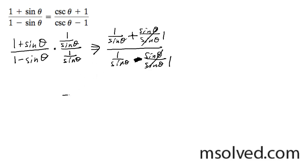And we ultimately end up with rewriting this 1 over sine theta as cosecant. We end up with cosecant theta plus 1 over cosecant theta minus 1. That's the solution.